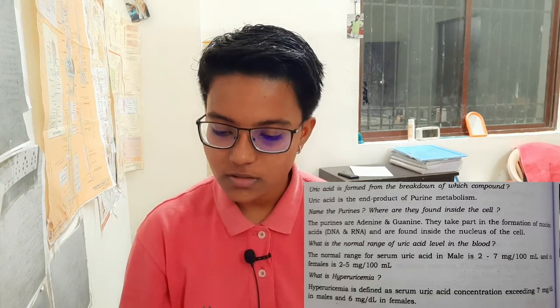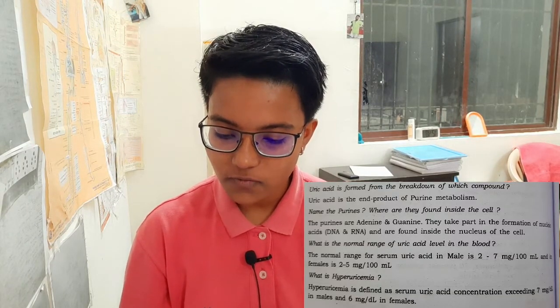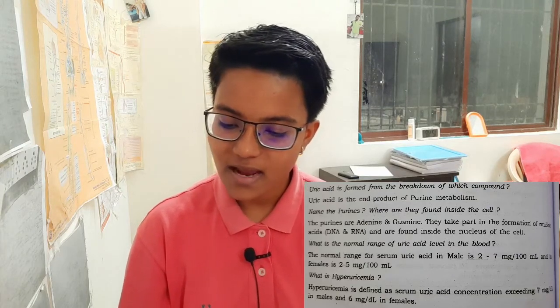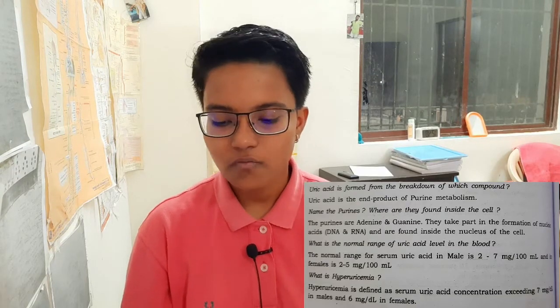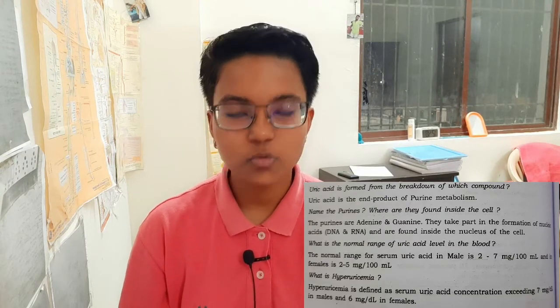Name the Purines. Where are they found inside the cell? The Purines are Adenine and Guanine. They take part in the formation of Nucleic Acids. DNA and RNA are formed inside the nucleus of the cell.